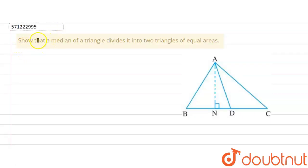The given question says show that, which means prove that, a median of a triangle divides it into two triangles of equal areas. We are given a triangle with a median and need to prove that the median bisects the triangle into two triangles of equal areas.